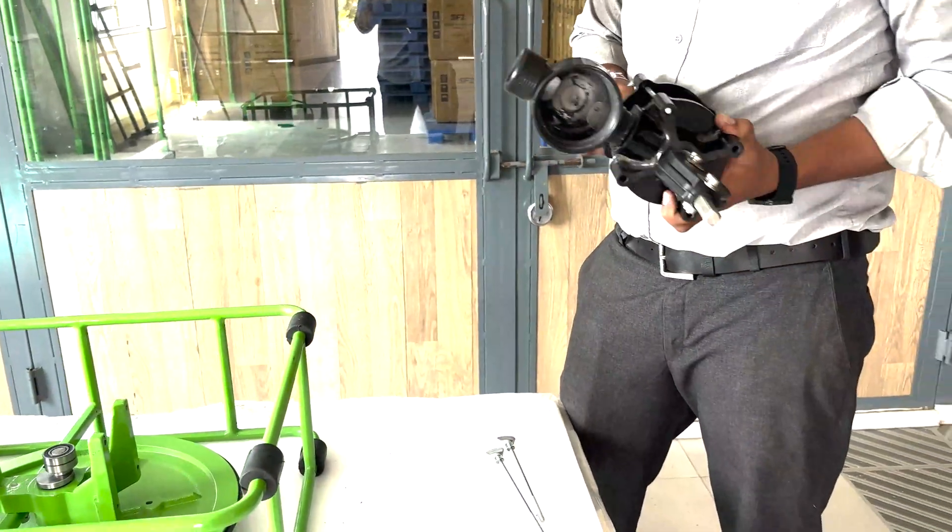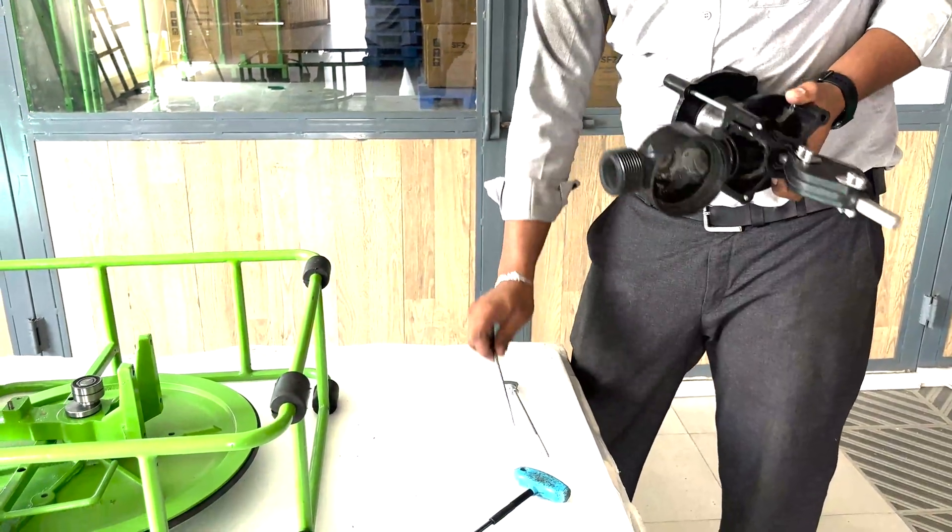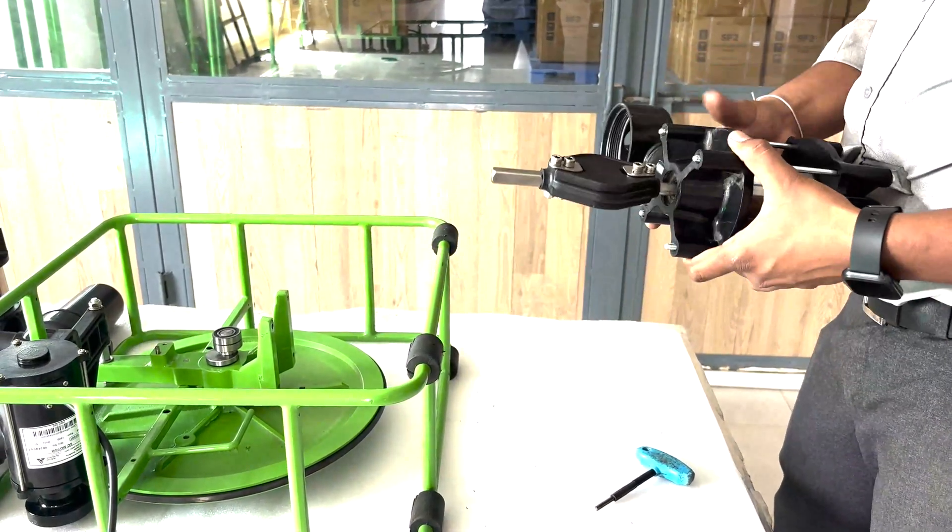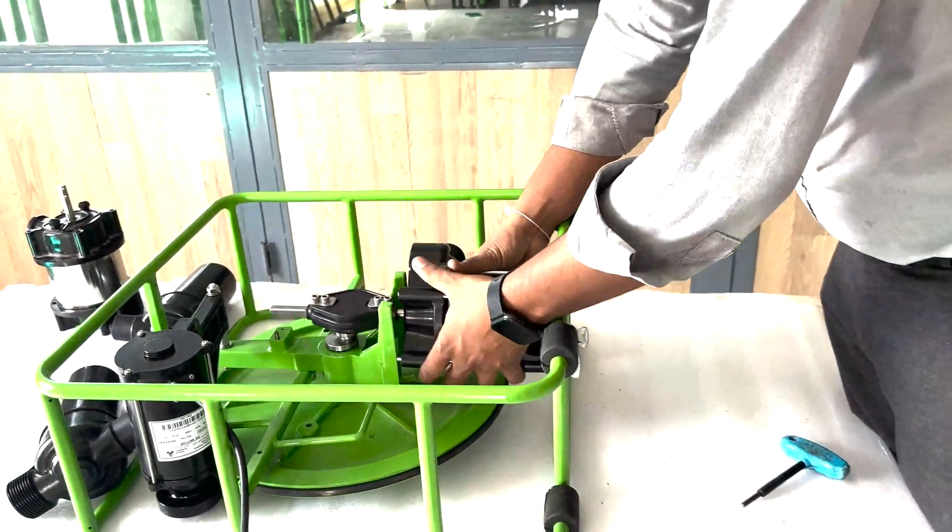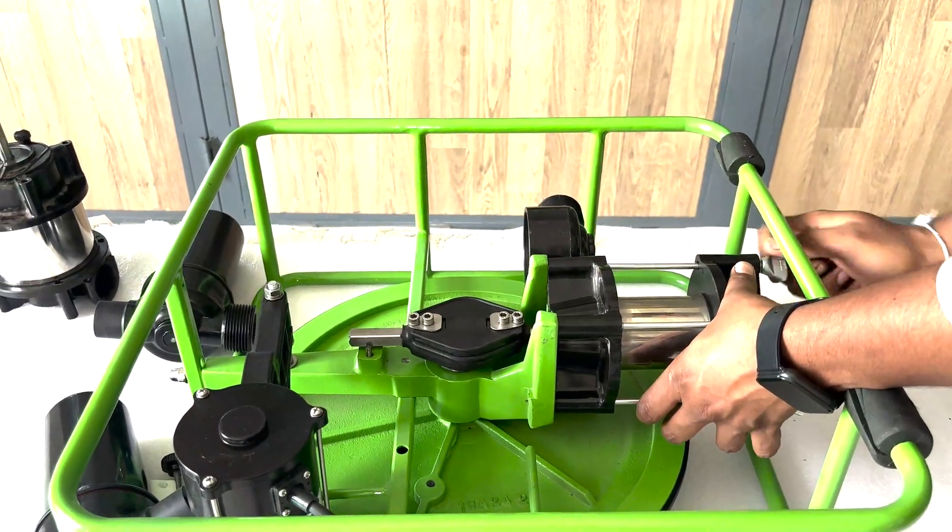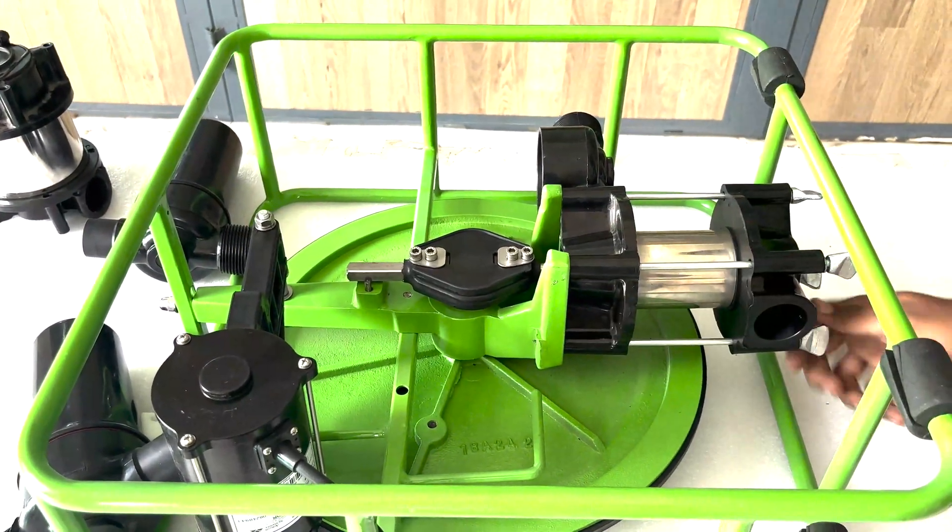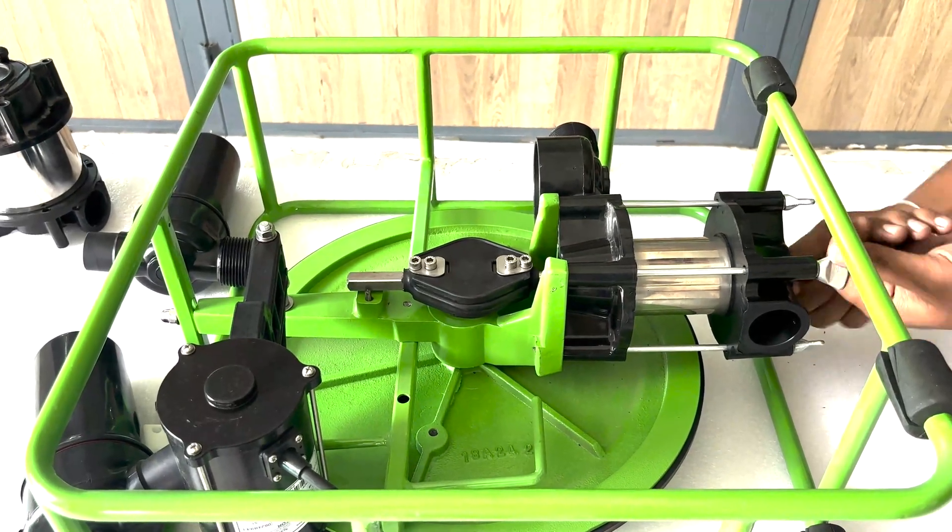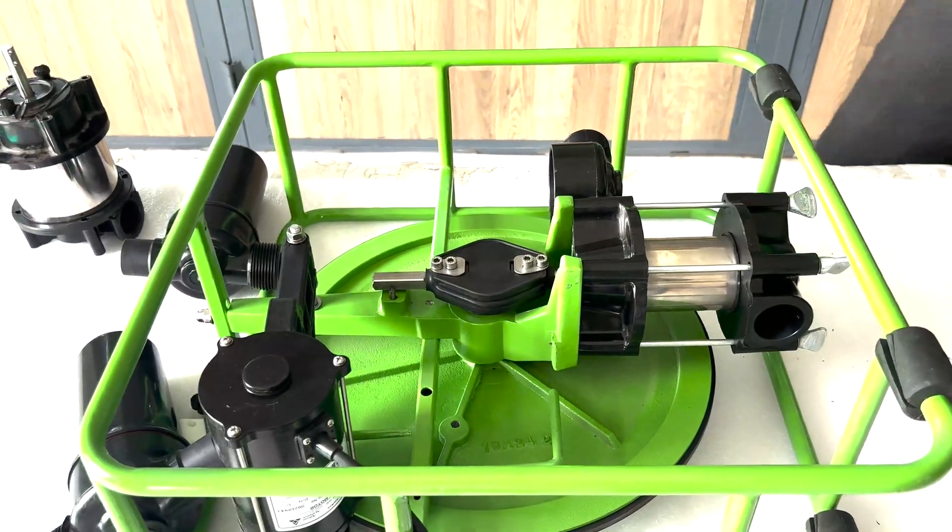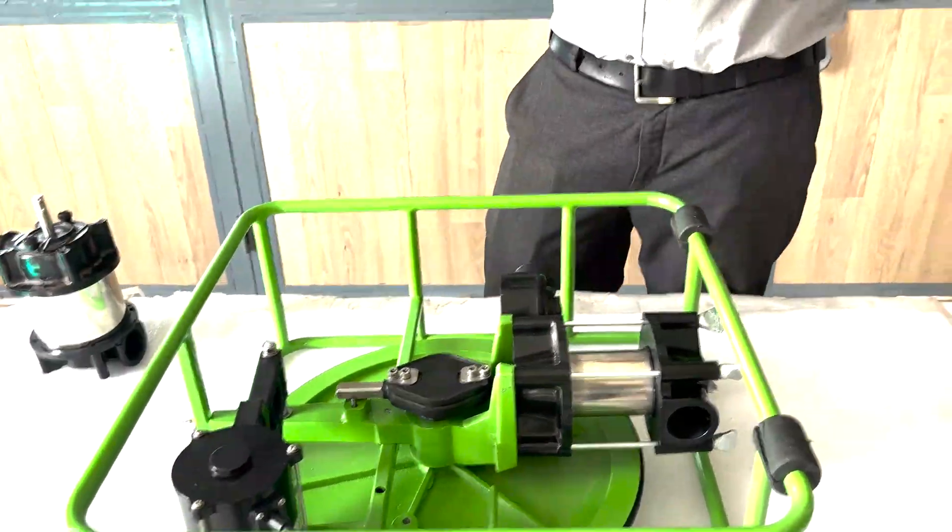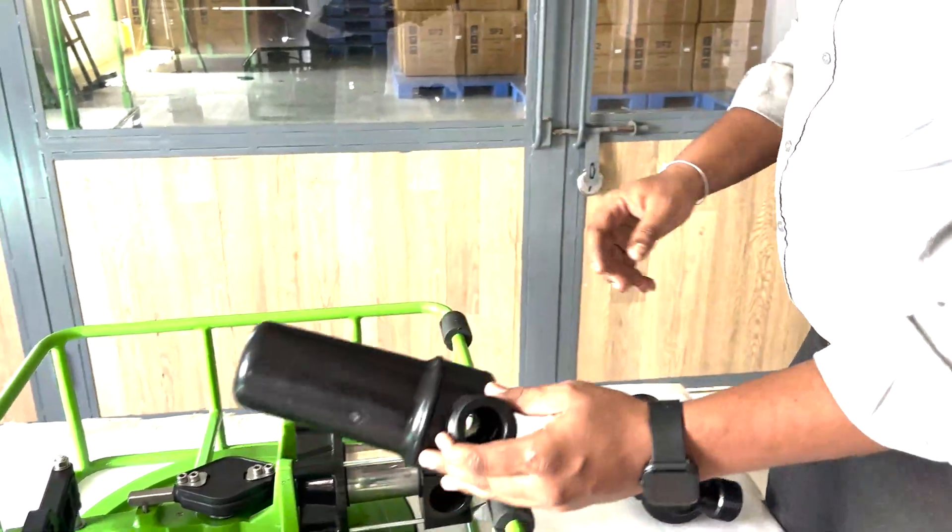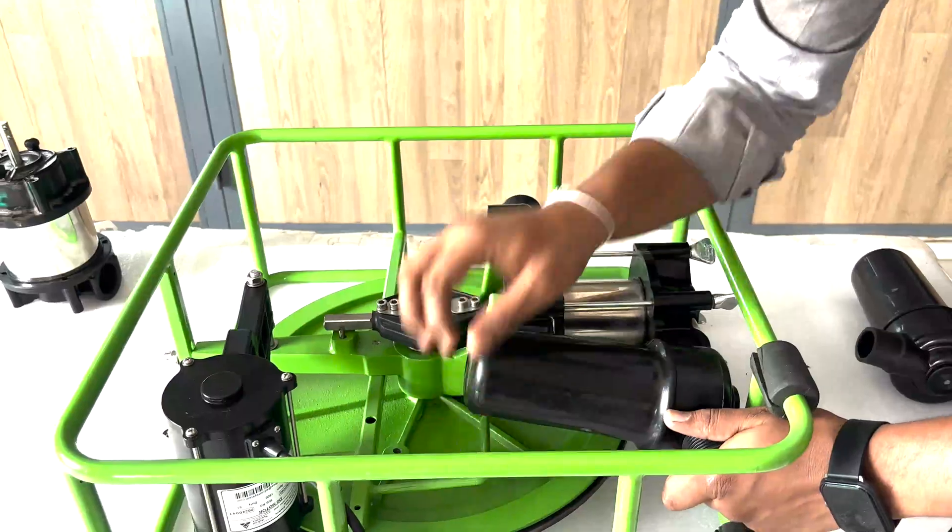Secure the pump unit to the cage with the four wing bolts. They should be hand tight. Take one of the air vessels off the cage and place it on the suction side by pushing it in and then securing it by turning.